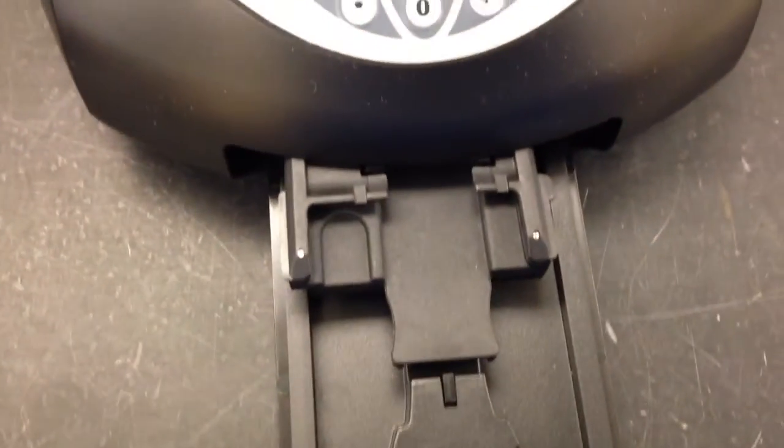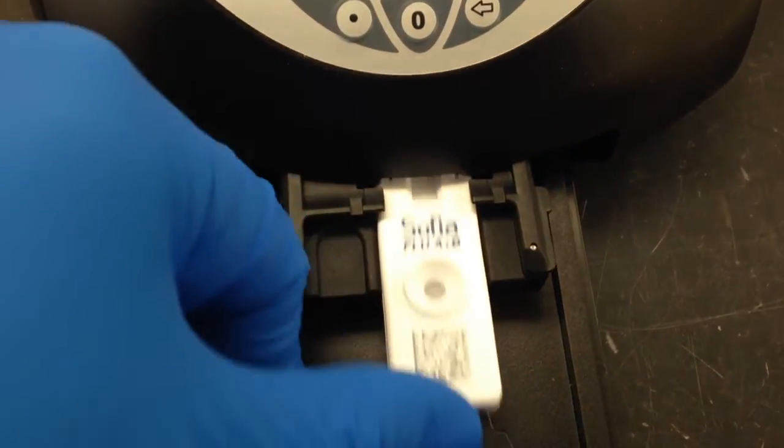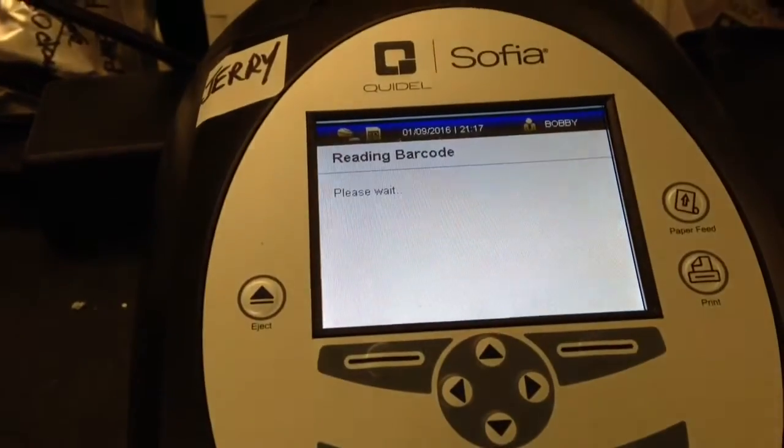Just pull it out, orient the cassette correctly. You see right there. Then push it in and once you load it, it's automatically going to start scanning.